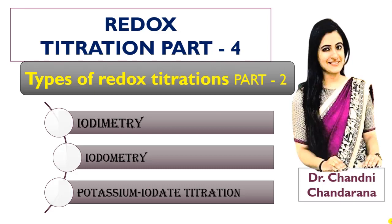First of all, what is the difference between iodimetry and iodometry? In iodimetry, iodine (I₂) is used as a titrant and acts as an oxidizing agent. In iodometry, iodide is used as the titrant and reacts as a reducing agent. This is the basic difference between iodimetry and iodometry titration.